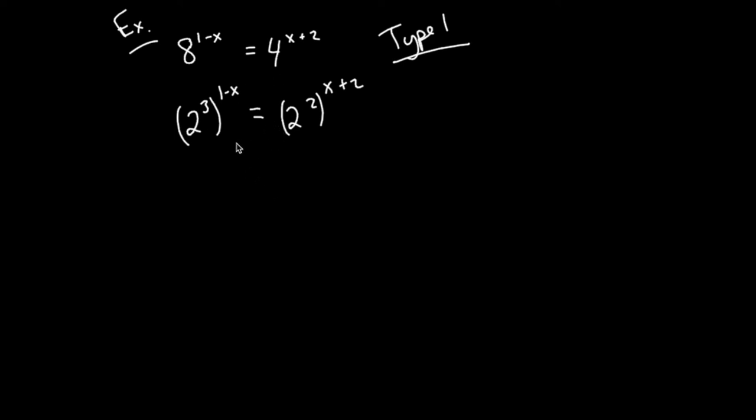So I have created the same base, but now I have some properties of exponents to simplify before I can actually drop the bases. I'm taking a power of a power, so when we do that we multiply the exponents. But when I multiply 3 times 1 minus x, don't forget that that 3 has to distribute. So this becomes 3 minus 3x. Same thing here. That 2 has to distribute because I'm multiplying this 2 by this whole x plus 2: 2 to the 2x plus 4.